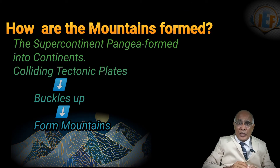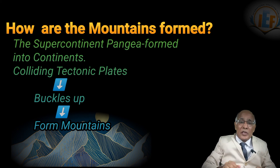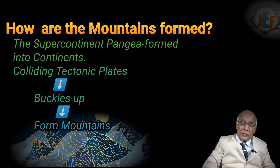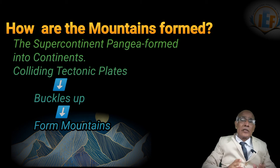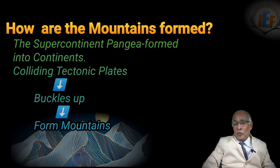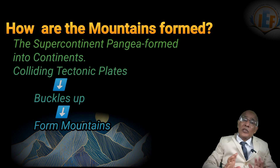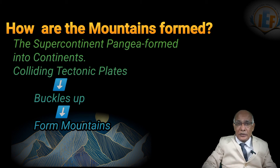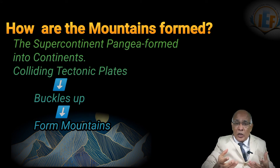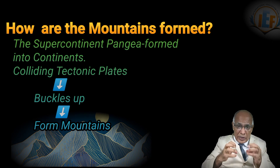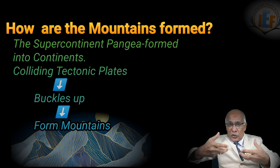Every answer will have a question. Now, we have seen the mountains. How these mountains are formed? There is a theory — the Pangaea. Pangaea is the theory of the beginning of the formation. Pangaea was called the supercontinent. All the continents were together, located on what we call the tectonic plates. The plates were together.